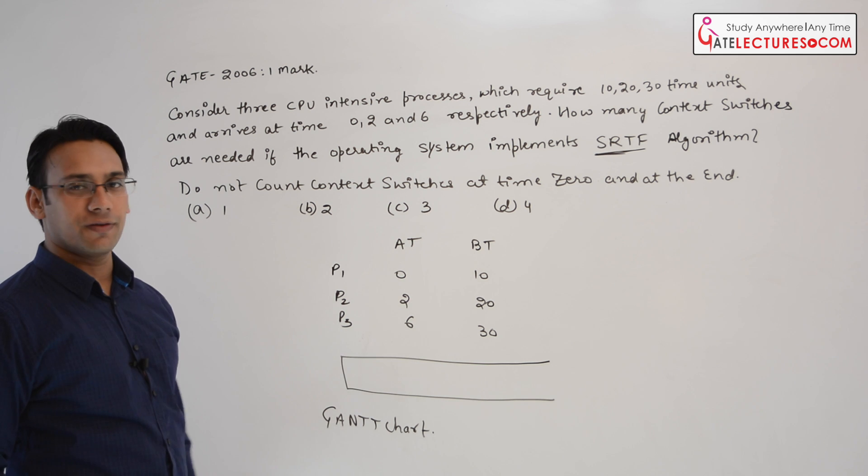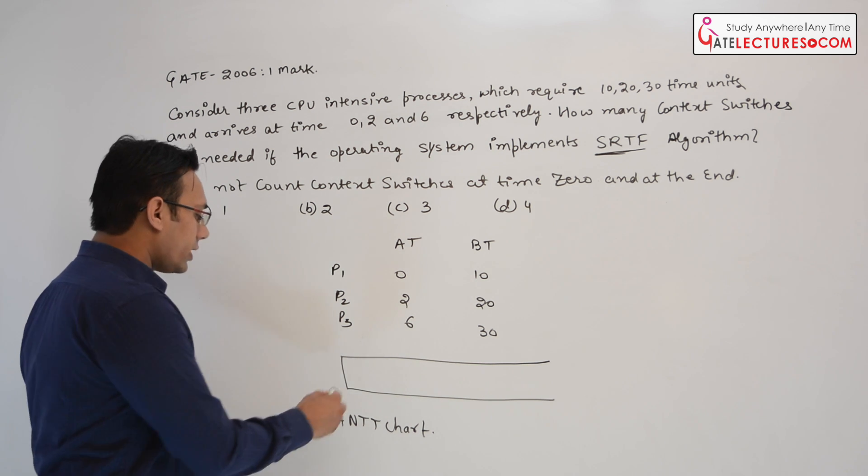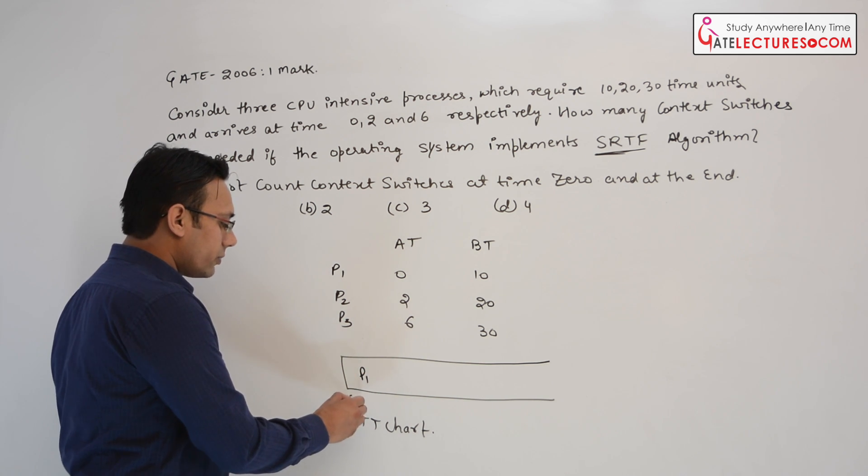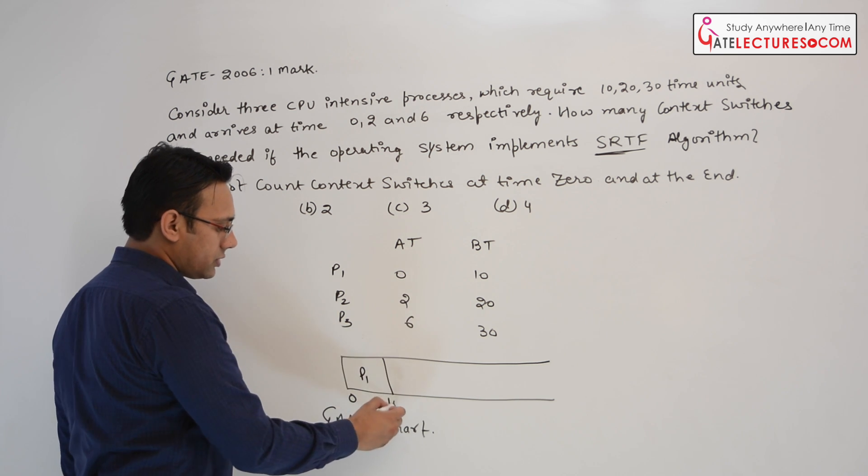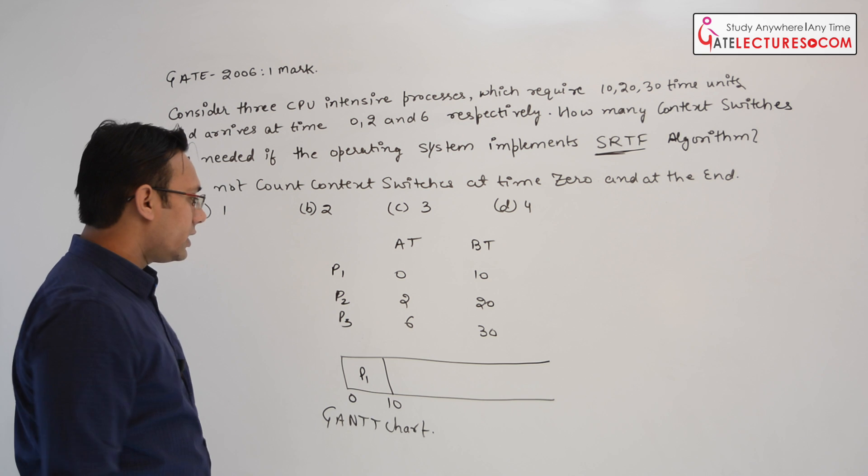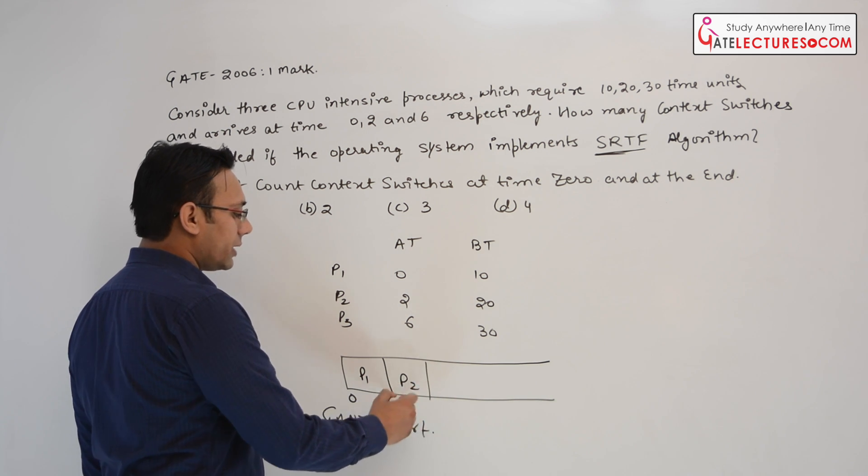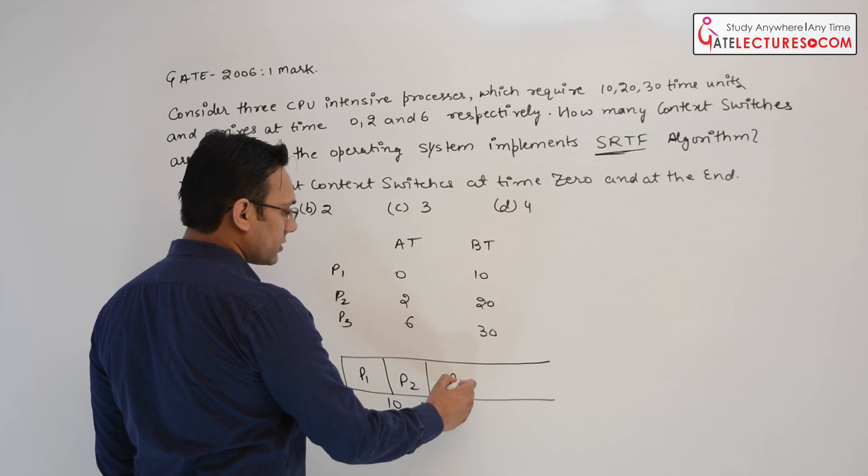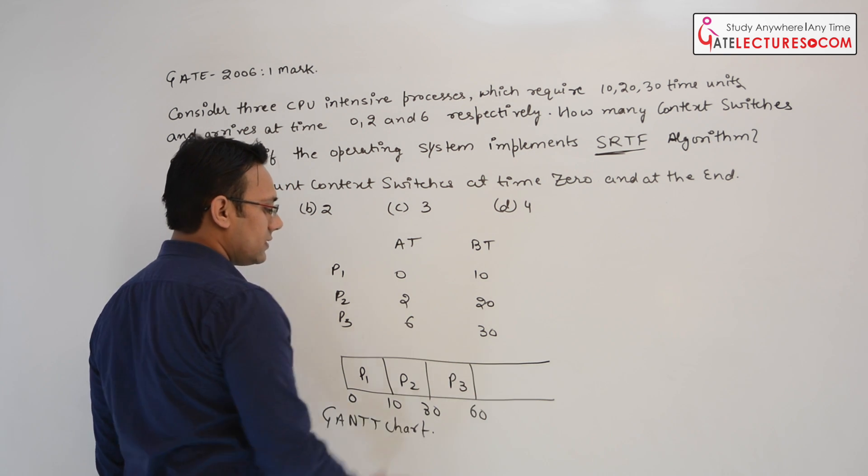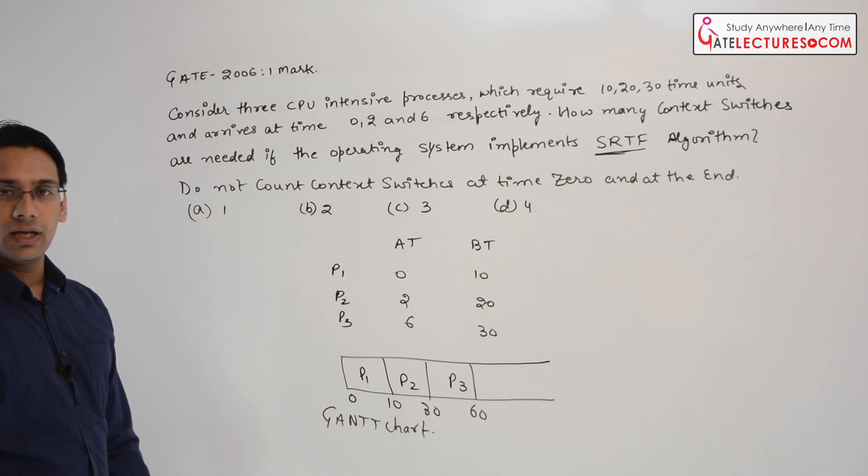So at time 0, only process P1 is available. We are going to execute the process P1 from time 0 to time 10, 10 units of time. After that, we are going to execute the process P2 from time 10 units to 30 and then we are going to execute the process P3 from time 30 to 60. Now, see how many context switches are there.